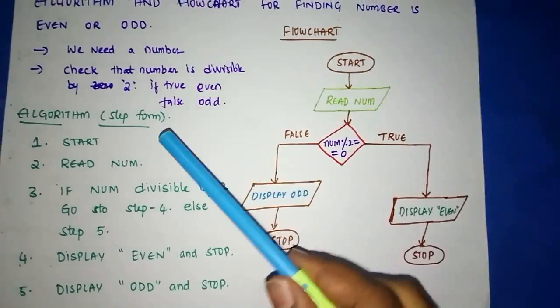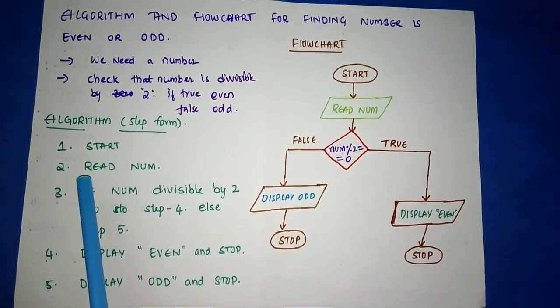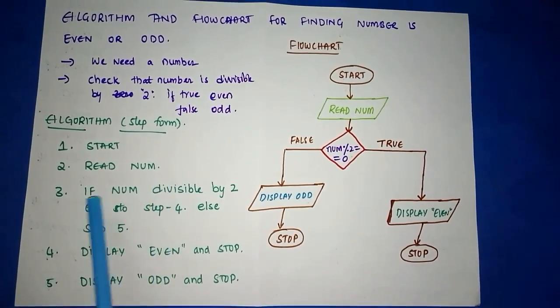Now coming to the algorithm. First step is START, and next you have to read a number. So step 2 is READ NUM.